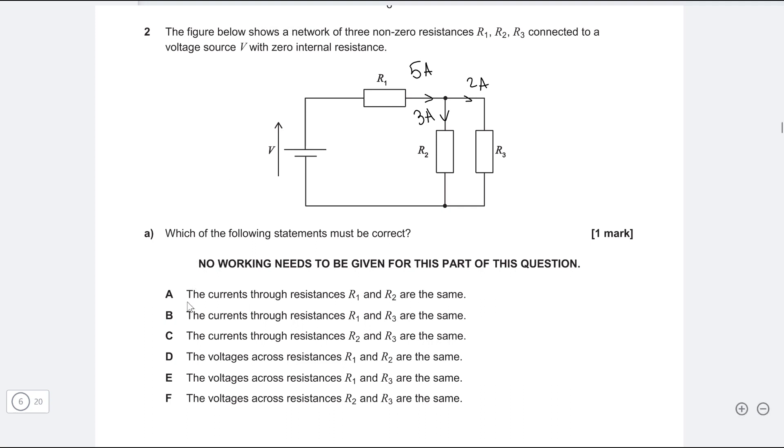Okay, well, let's have a look. So statement A, the current through resistances R1 and R2 are the same. Well, that's not the case. In fact, no currents are going to be the same in this question. So we can cross this one out.